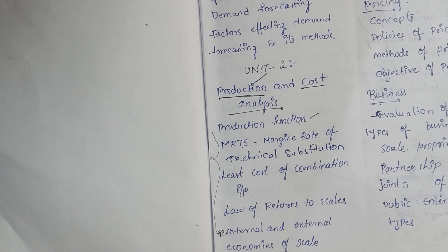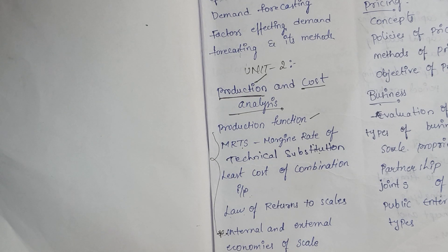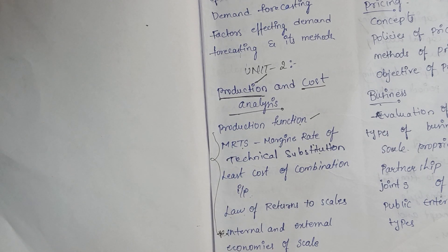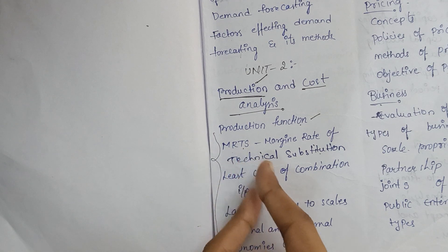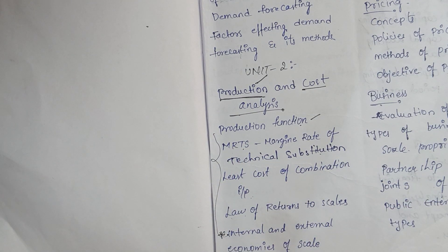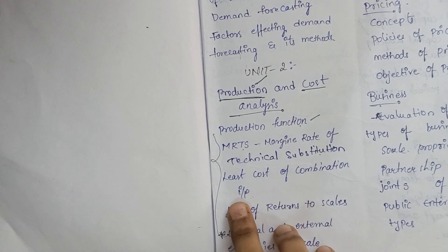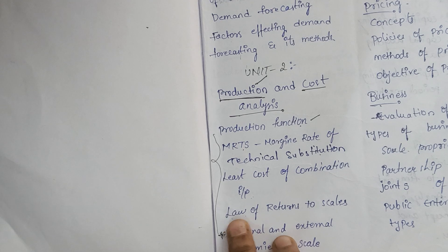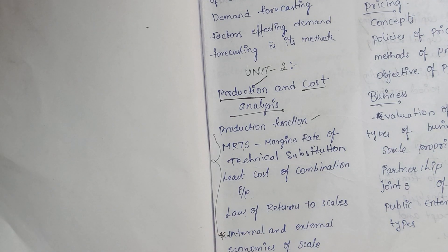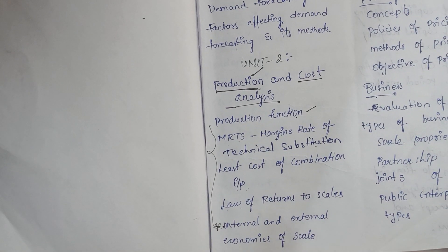In this unit we are covering topics of production and how cost is done on the product. We have divided it into two parts for better learning. The first part is about how production is done, what are the production functions, MRTS (Marginal Rate of Technical Substitution), least cost combination of input, the law of returns to scale, and internal and external economics of scale.